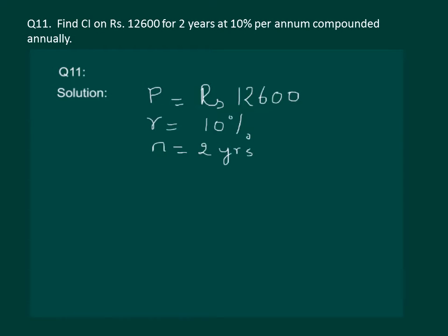We know that the formula for the amount when interest is compounded annually is: A = P into (1 + r/100) whole power n.